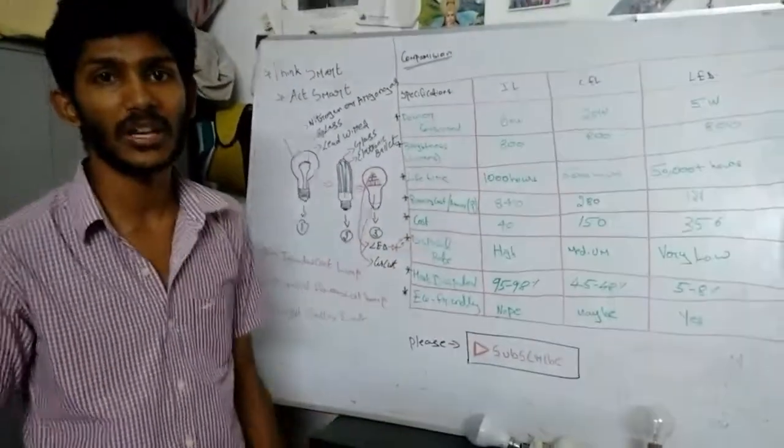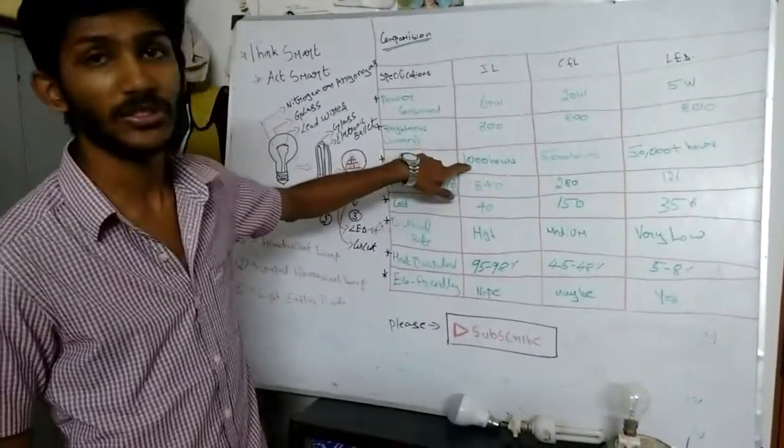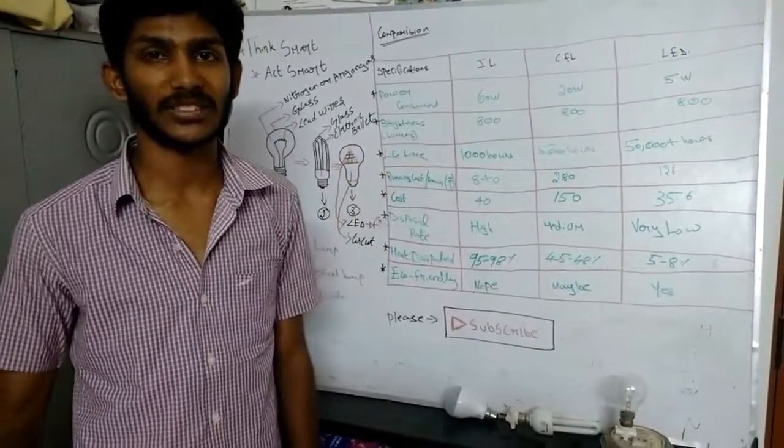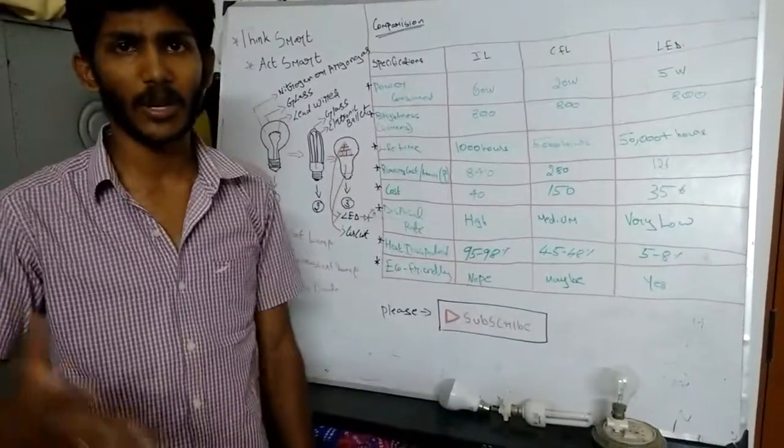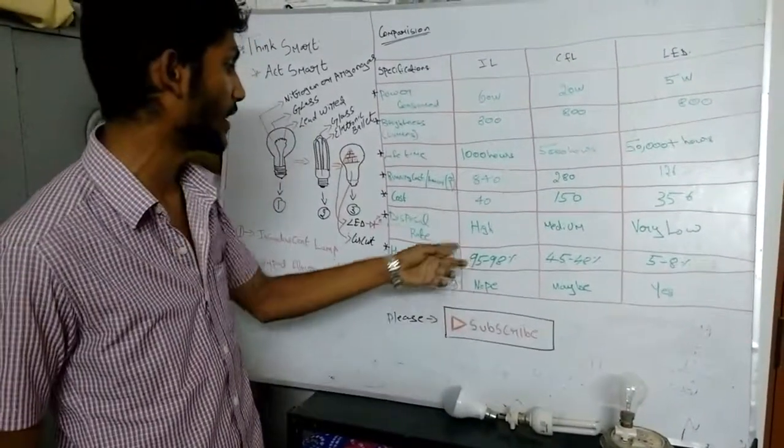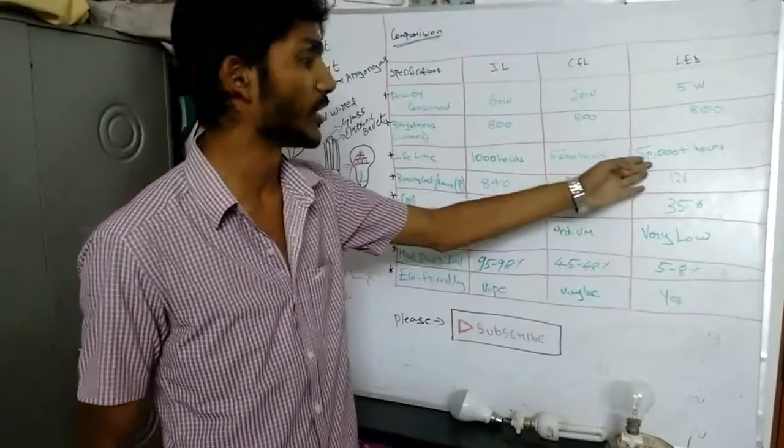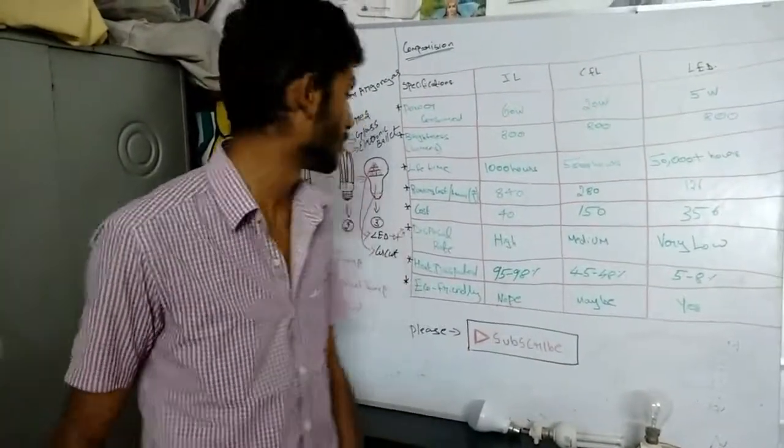Disposal rate. It only runs for 1000 hours. So many lamps are disposed as incandescent lamp, so the disposal cost is very high. And it is medium, and it is very low. Only after 50,000 hours plus the LED lamps are disposed.